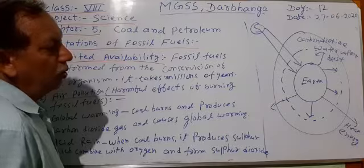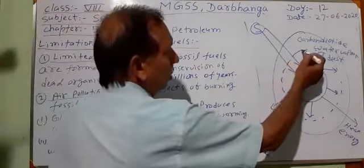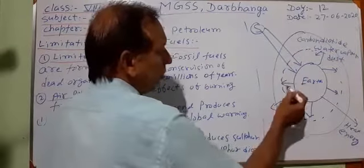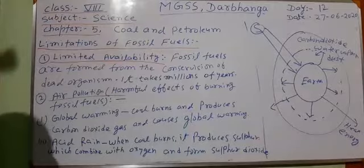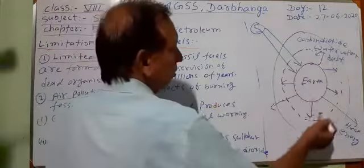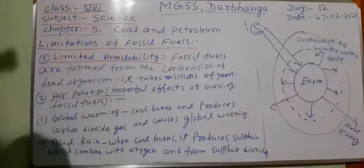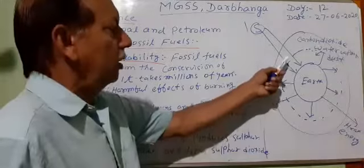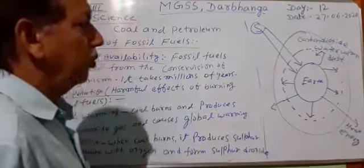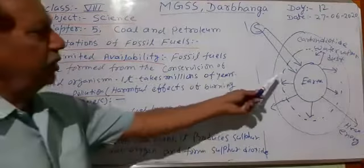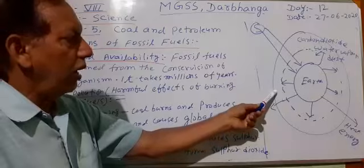But how does global warming take place? When the percentage of carbon dioxide increases, more and more heat is entrapped at the earth surface, and then the temperature of the earth surface increases. This is global warming. The increase in average temperature of the earth surface is known as global warming.